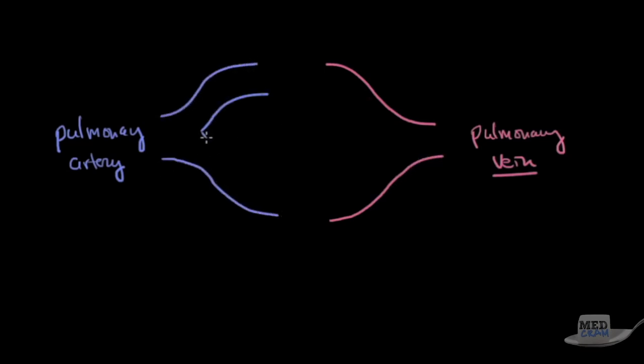If we look at the pulmonary vascular system, we start out with the pulmonary artery and it's in blue because it's deoxygenated, and it ends up in the pulmonary vein which is oxygenated. I've drawn this so that it's pretty easy to tell that 50 percent is going in this direction and 50 percent is going in this direction.